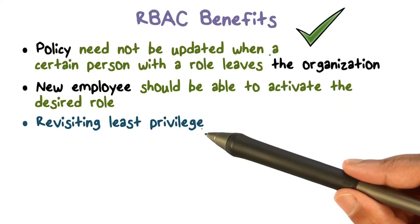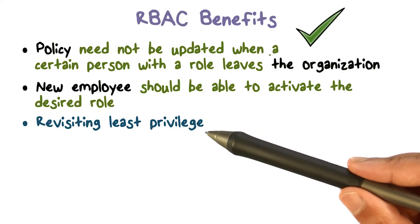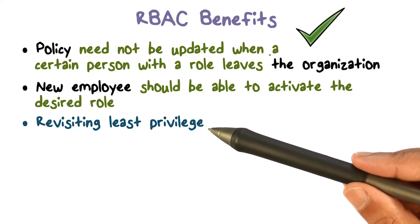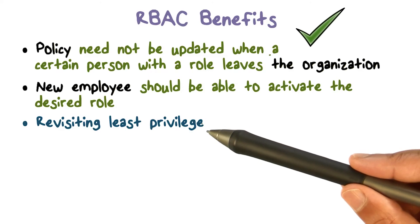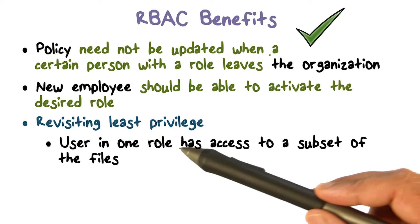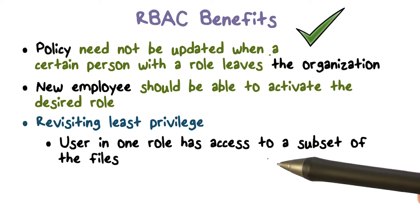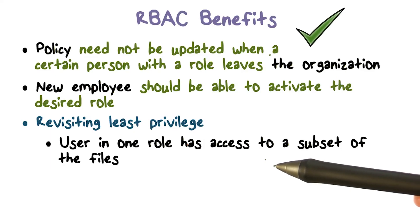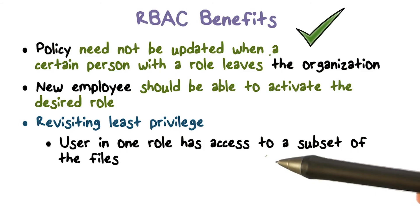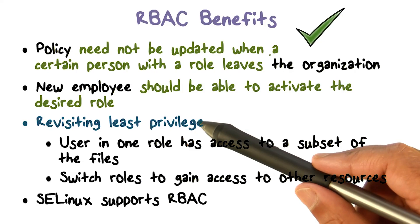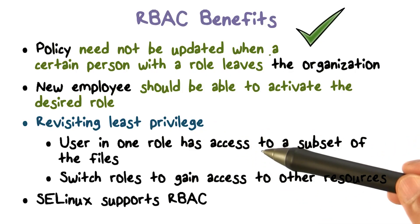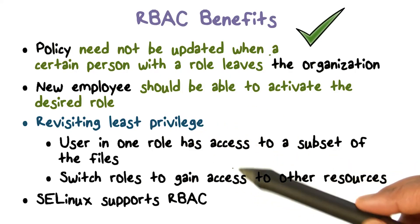Least privilege is one of the design principles we discussed — you should always execute with the smallest number of privileges needed for what's being done at that time. It's a damage containment measure: if something goes wrong, you don't negatively impact resources you had no business accessing. RBAC helps with this because a user can start in one role and access only the files available to that role, then switch roles to access a different set of files. Without RBAC, a user has a UID and access to everything they can ever access. RBAC enables least privilege, which is a design principle for trustworthy systems.